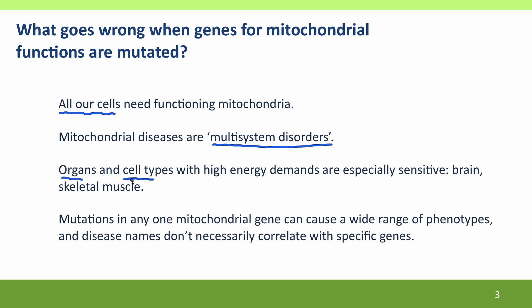Any organs or cell types that need really high amounts of energy are especially sensitive to mitochondrial mutations, including our brain and skeletal muscles. Because mutations in mitochondrial genes can cause a wide range of phenotypes, and mutations in different mitochondrial genes can cause very similar phenotypes by generally interfering with mitochondrial function, disease names are not very helpful and not very useful.